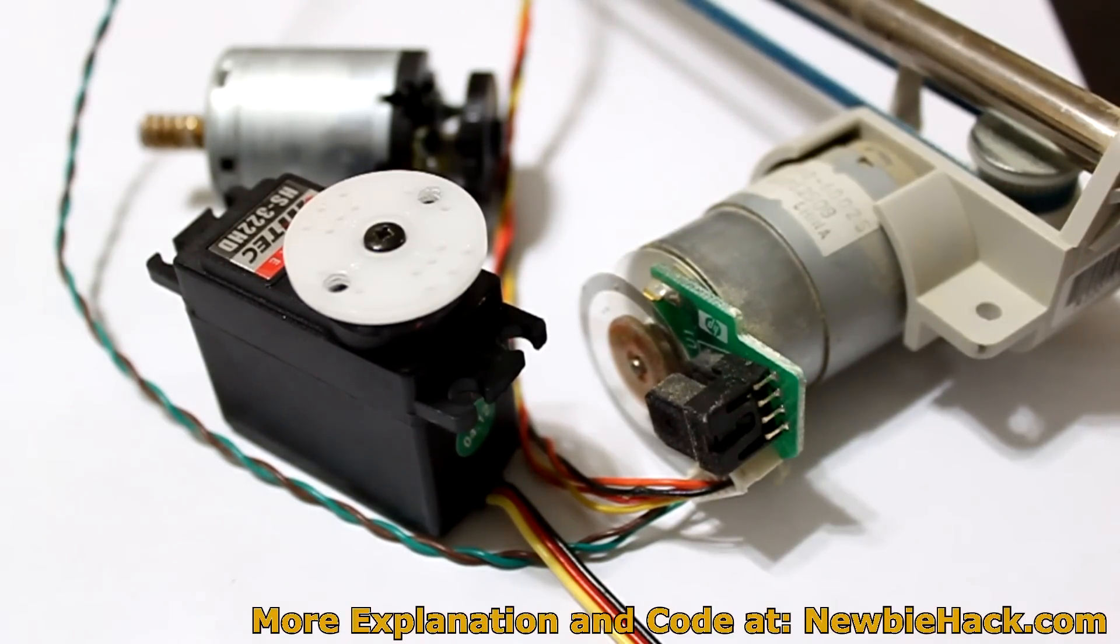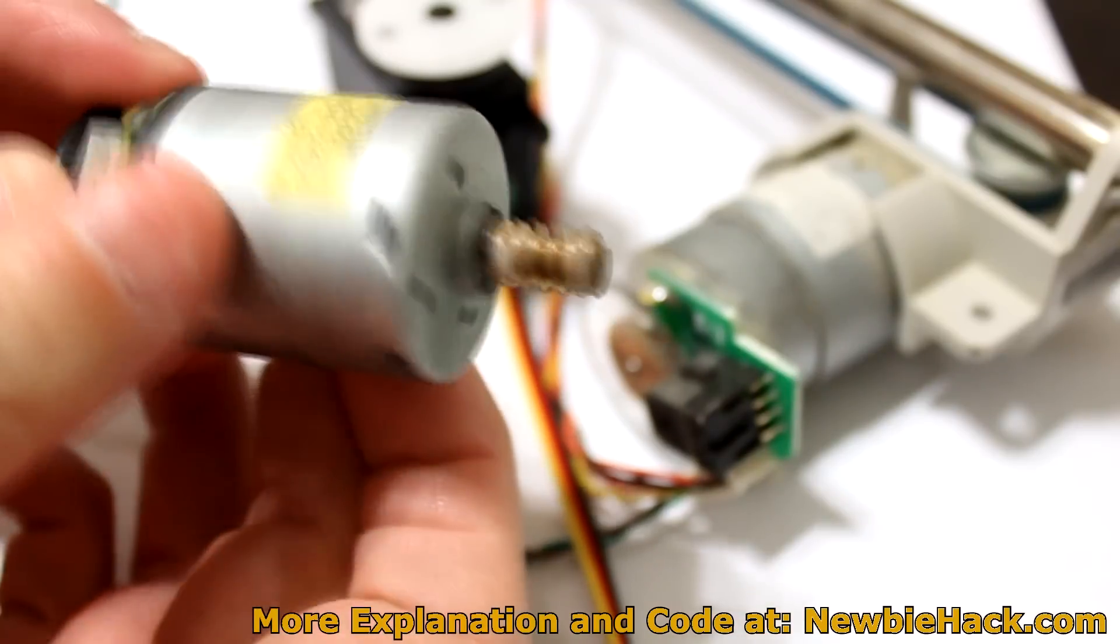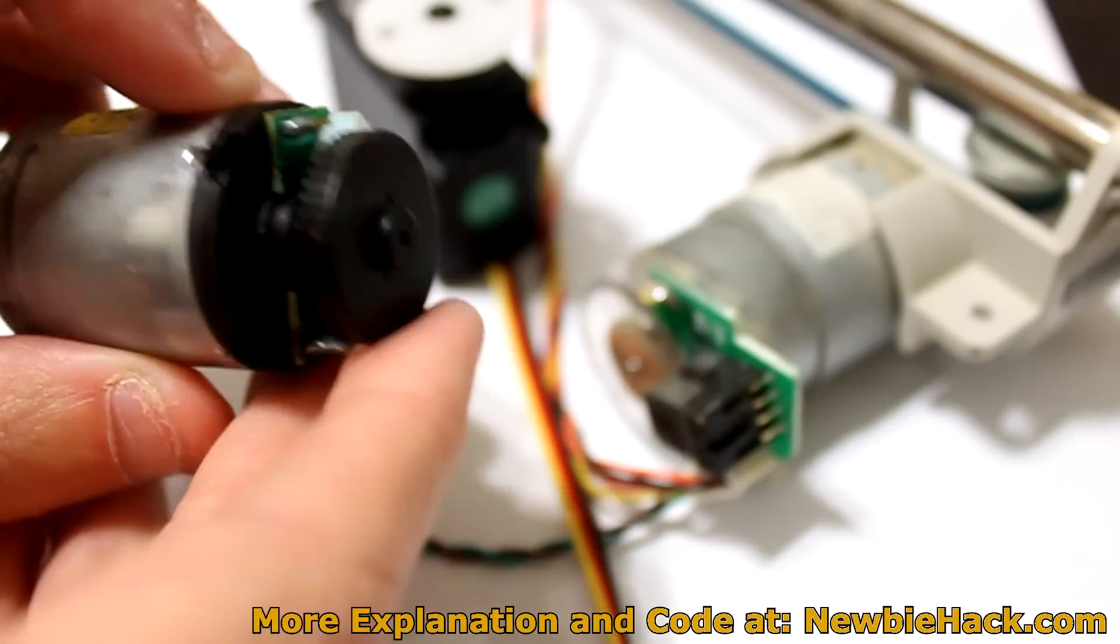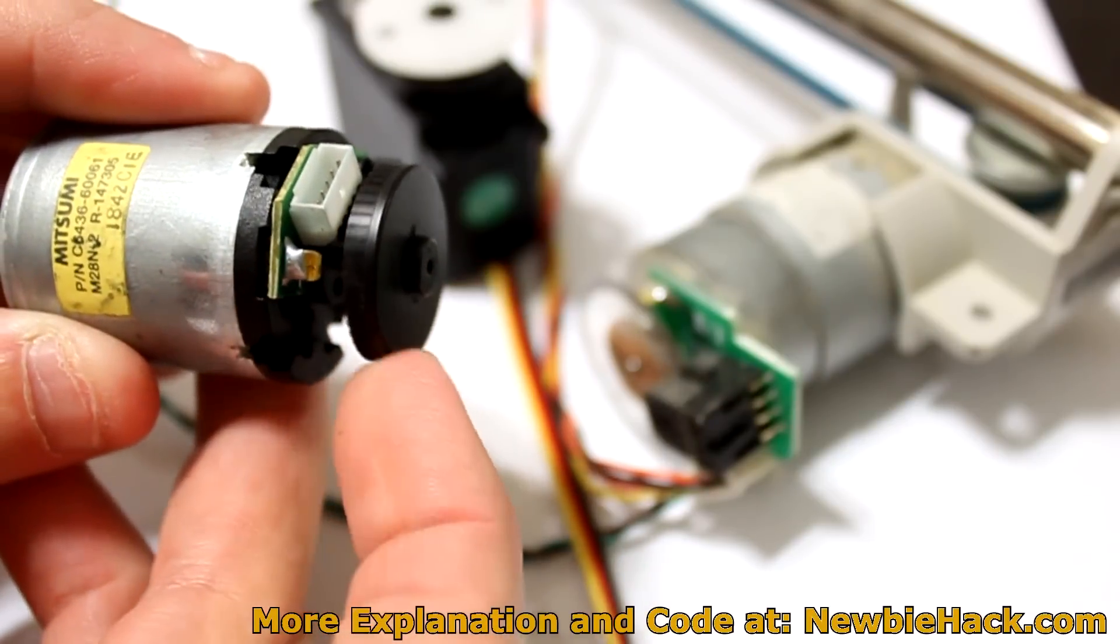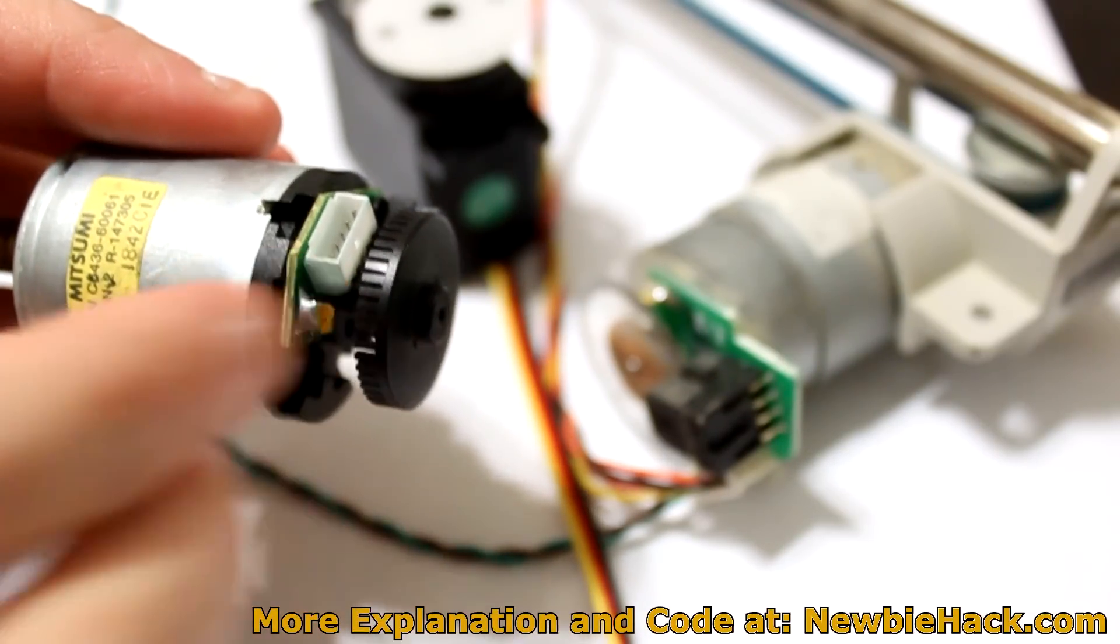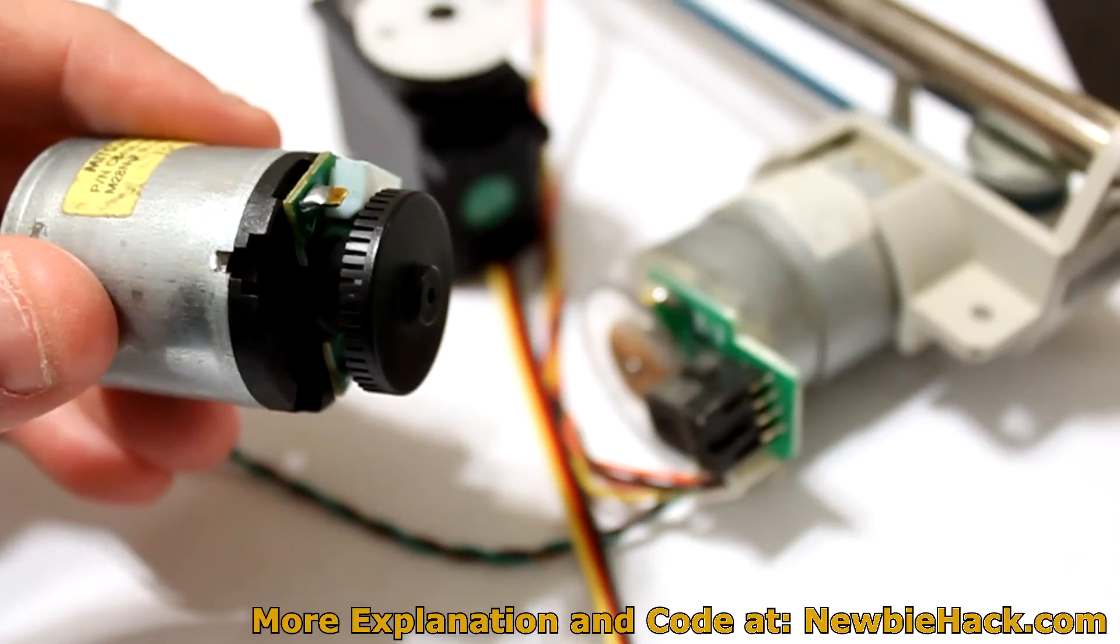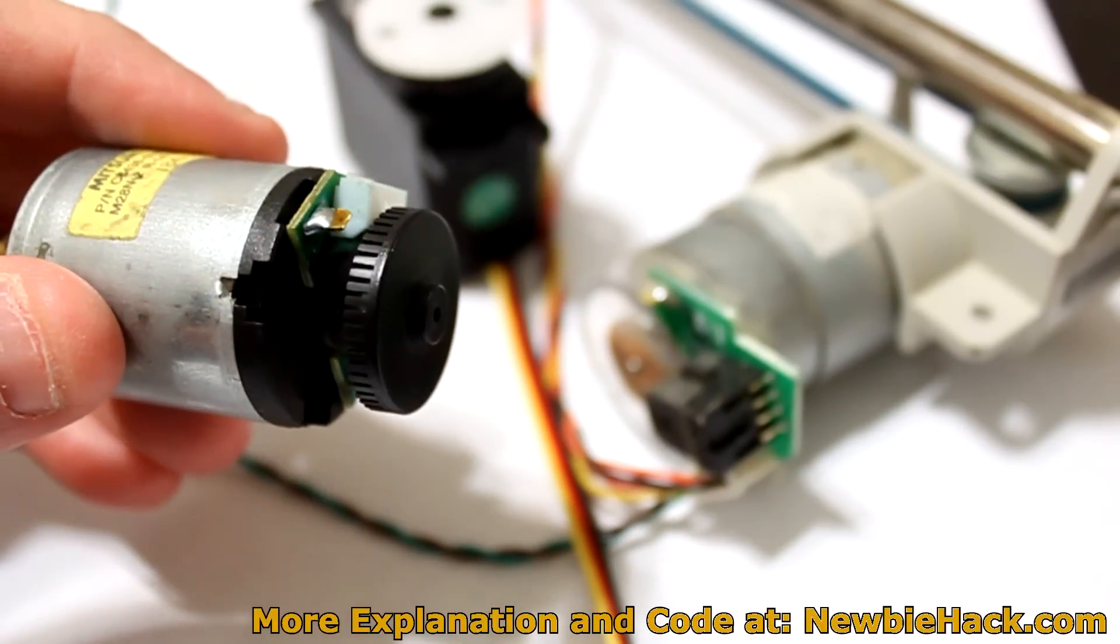The components of a servo consist of a motor, which may look like this. It has also a device that understands its position, and it would also contain electronics to be able to have the position fed back into the electronics to control the motor's position.